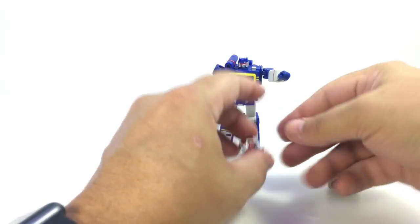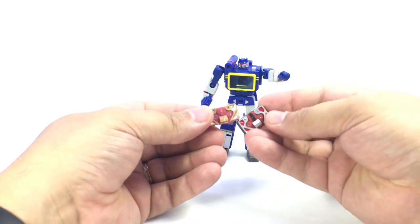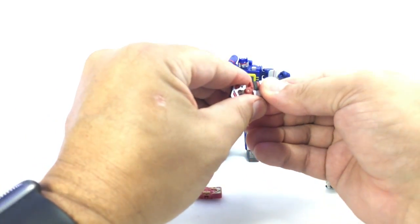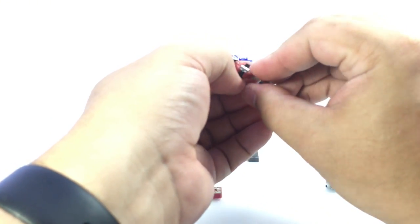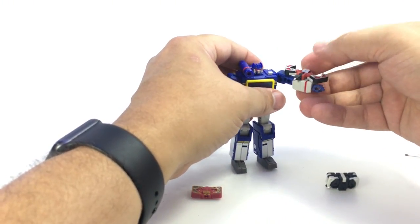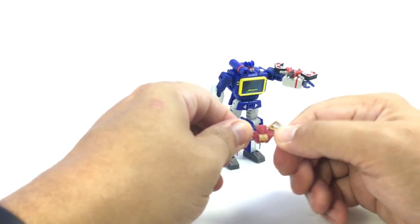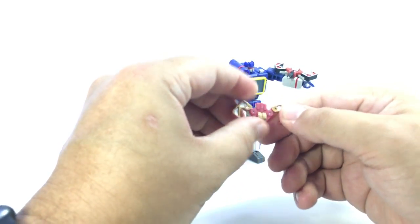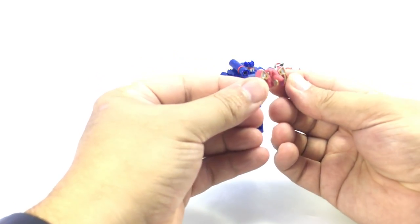The cassettes. So Laserbeak and Ratbat transform the same way. They're basically the same transformation with different heads. Laserbeak, you just kind of pull his wings out and back, and then flip his bird head out and about so it faces straight forward. And there you have a little Laserbeak that doesn't peg into Soundwave's arm, but you can have him rest up there if you want. Ratbat, again, the same thing. You kind of pull his wings down and around like that. Flip his head around. Although his head is shaped differently, sculpted differently from Laserbeak's. And it comes all the way down and around like that to kind of give him the bat look that his old cassette did.